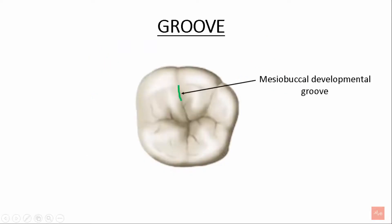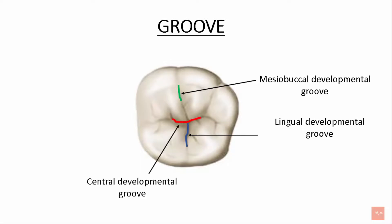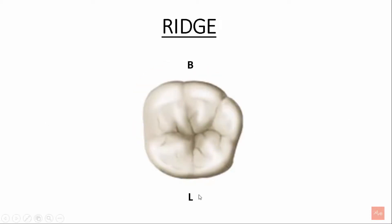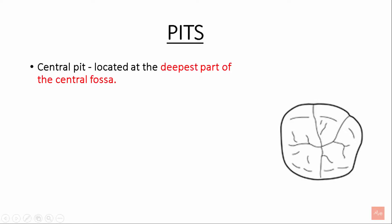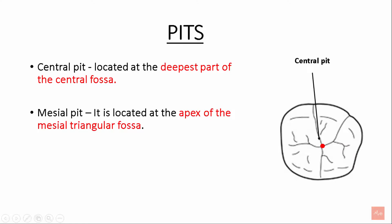Looking at the grooves: this is the mesiobuccal developmental groove, the lingual developmental groove, the central developmental groove, and the distal developmental groove. This is the buccal side and the lingual side. There is also the mesial marginal ridge and the distal marginal ridge. There are three pits: the central pit, located at the deepest part of the central fossa, and the mesial pit, located at the apex of the mesial triangular fossa.